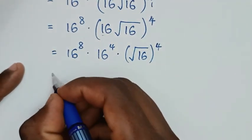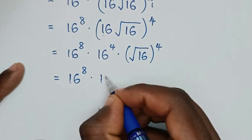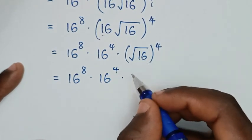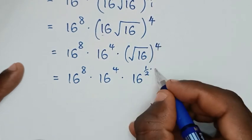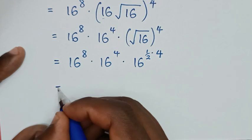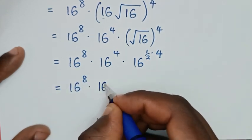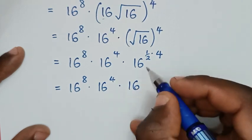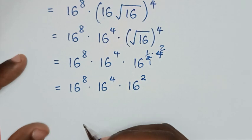Then it will be equal to 16 power of 8, times 16 power of 4, times square root of 16 — which is the same as 16 power of a half — then times this power of 4. So it will be equal to 16 power of 4, times 16 power of 4, times 16 — here we'll simplify by 1, this by 2 — so it will be 16 power of 2.